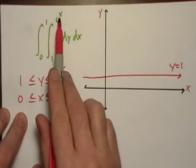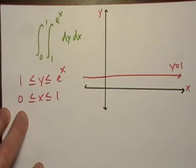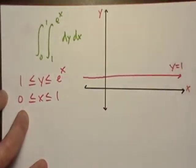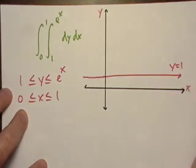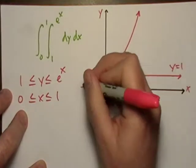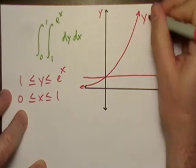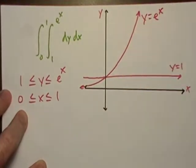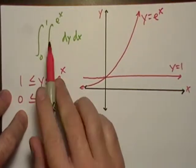And then, let's see, its upper limit is e to the x. So I'm going to try my best to draw just a most pristine, beautiful exponential function. I don't think it's going to happen. Actually, that turned out pretty good. Okay, y equals e to the x.